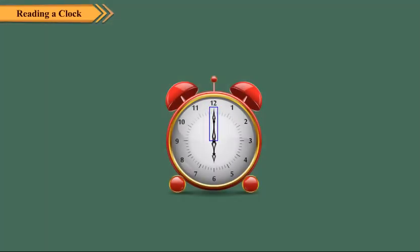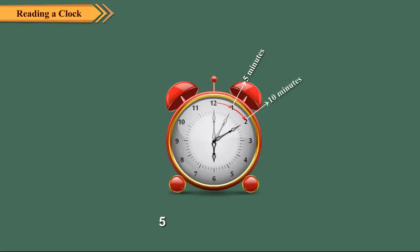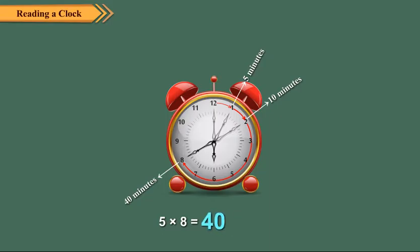We know that the minute hand moves from one number to the next in 5 minutes. So, we can find the number of minutes indicated by the minute hand using the multiplication table of 5. If the minute hand is at 2, then it is 5 × 2, which equals 10 minutes. If the minute hand is at 8, then it is 5 × 8, which equals 40 minutes.